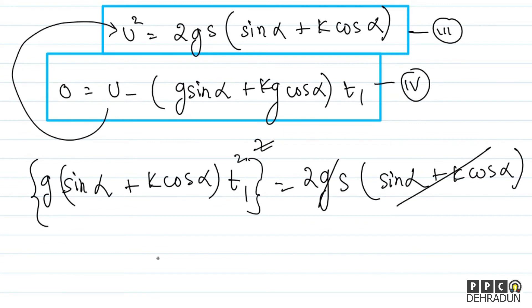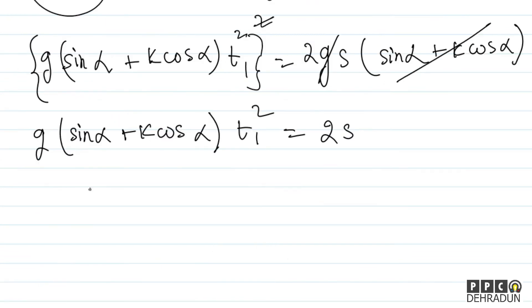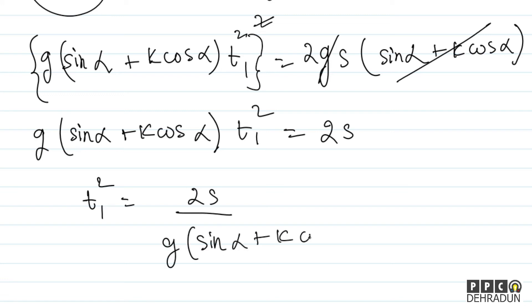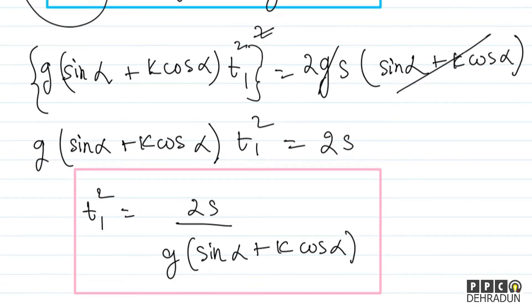So t1² = 2s / [g(sin alpha + k cos alpha)]. This is the expression for t1 squared.